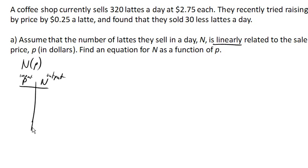Let's read the problem and see what we can figure out. We know that we're currently selling 320 lattes a day, which is a number N, at a price of $2.75. They tried raising the price by 25 cents a latte, which means they tried raising the price to $3. They found that they sold 30 less lattes in a day, so 30 less would be 290.